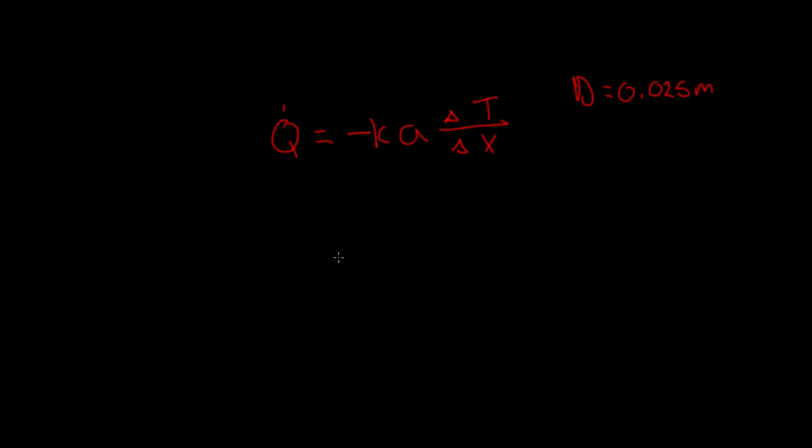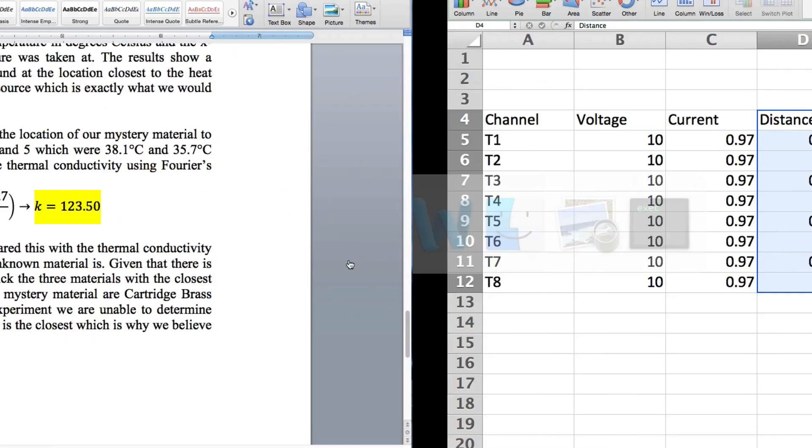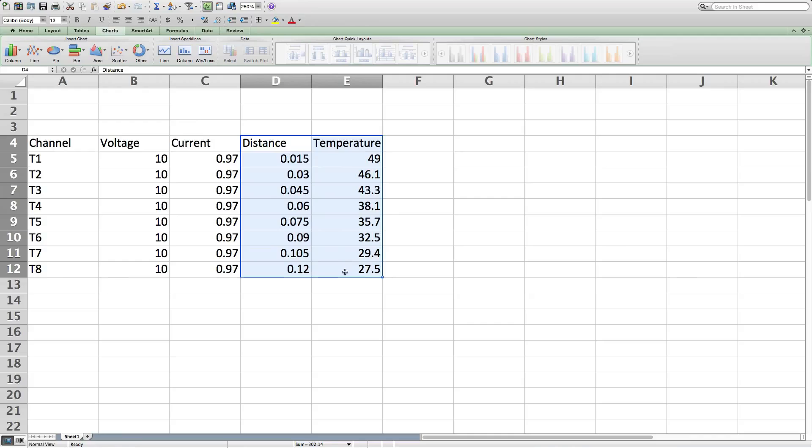Okay, now let's look at the data we're going to be recording in the lab and see how that helps us. So here's an example of the data you might be recording in the lab. You're going to have eight data points, there's going to be eight channels, T1 through T8.